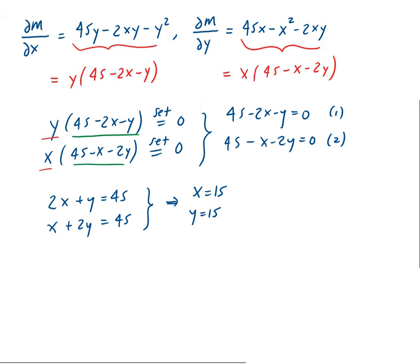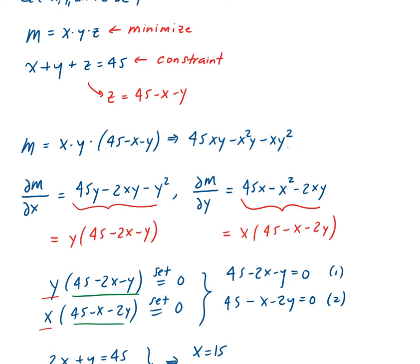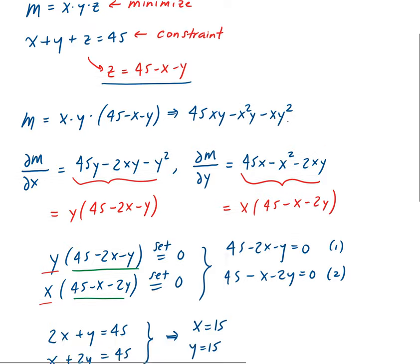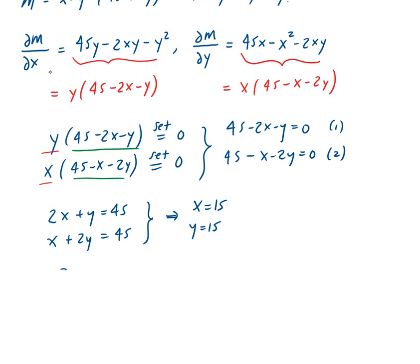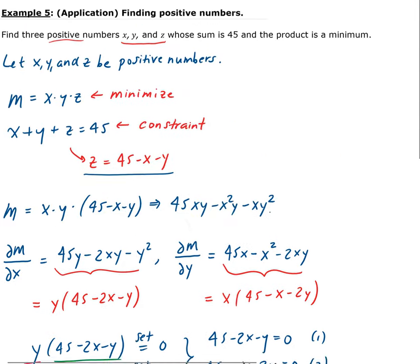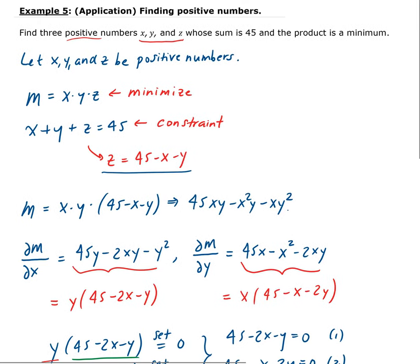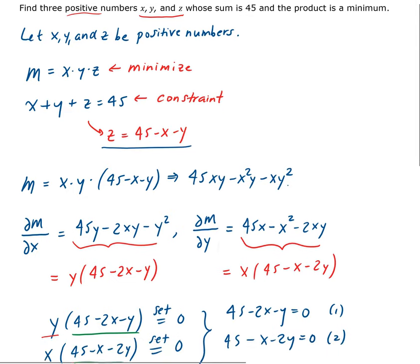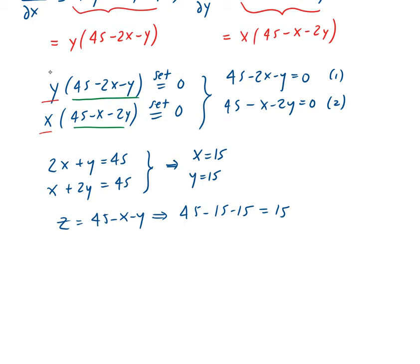Now to get z, we substitute x and y back into our constraint. So z equals 45 minus x minus y, which gives us 45 minus 15 minus 15, and that equals 15. So the three numbers are x equals 15, y equals 15, and z equals 15 — whose sum is 45 and whose product is a minimum.